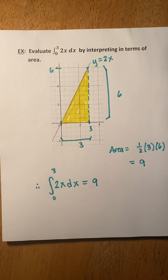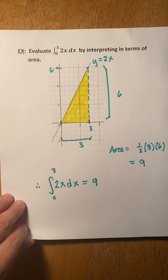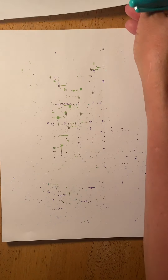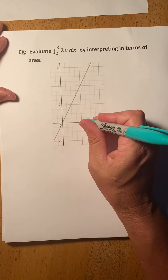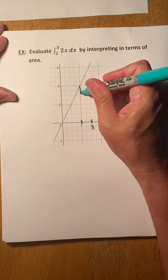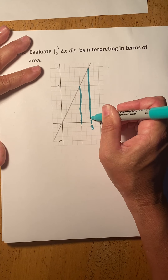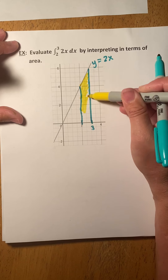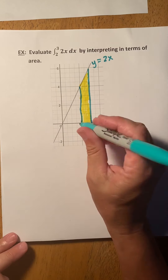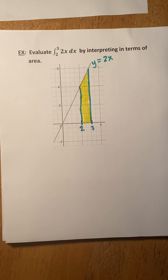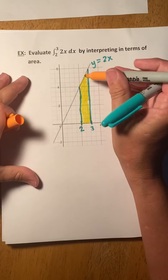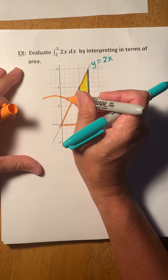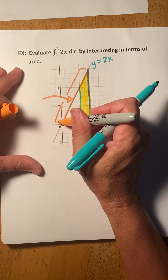It works very nicely when we have a shape we can compute using geometry. Now let's try another one. Suppose you were asked to evaluate the integral from 2 to 3. So this time I only care about from here to here — here's 3. There are several ways to do this. We're looking for the area under y equals 2x between 2 and 3. We do know the entire area from 0 to 3 — we found that last time. We found the area inside the big triangle was 9.